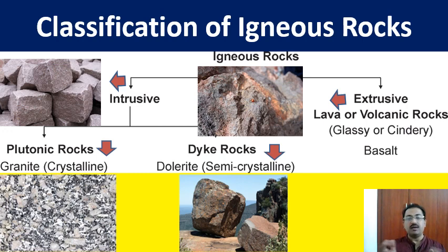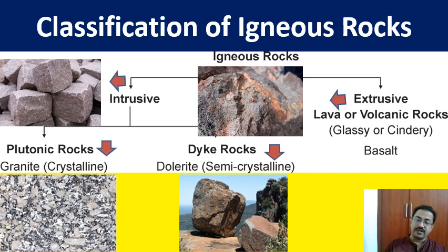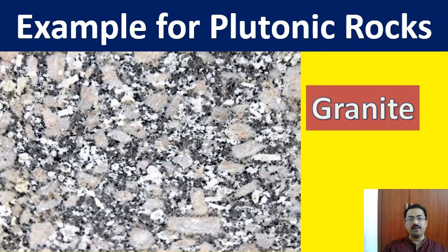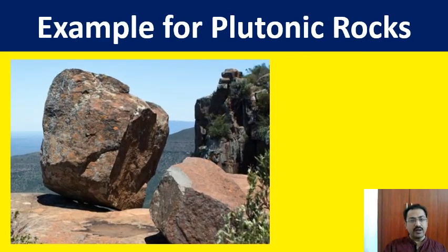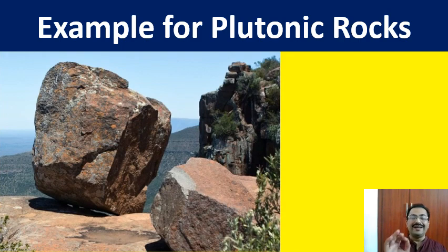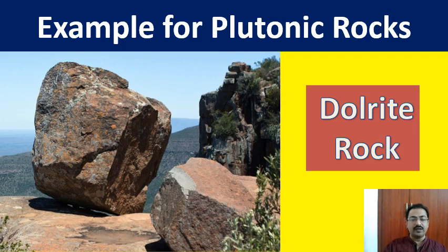In extrusive or volcanic rocks, glassy or cindery basalt rocks are examples — example pictures are shown. This classification of igneous rocks is very important. Granite is an example of plutonic rock — you have seen granite floors. Dolerite is one more example of a plutonic rock, also called a dyke.